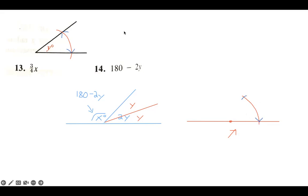Then I take my straightedge and connect from the base point through that arc intersection. It's freehand so it looks rough, but you get the basic idea — there's the first y.